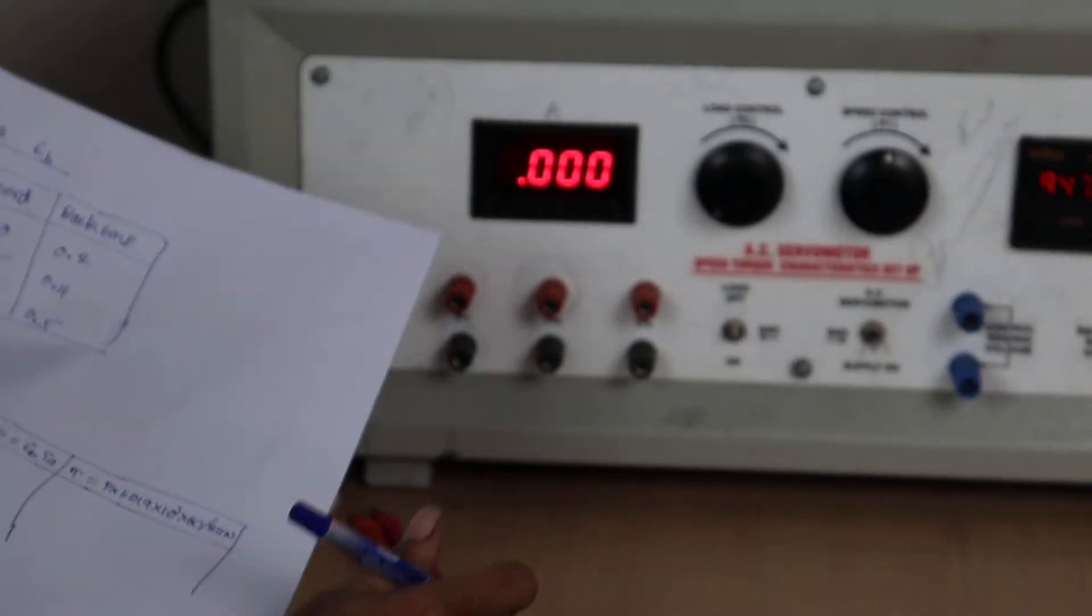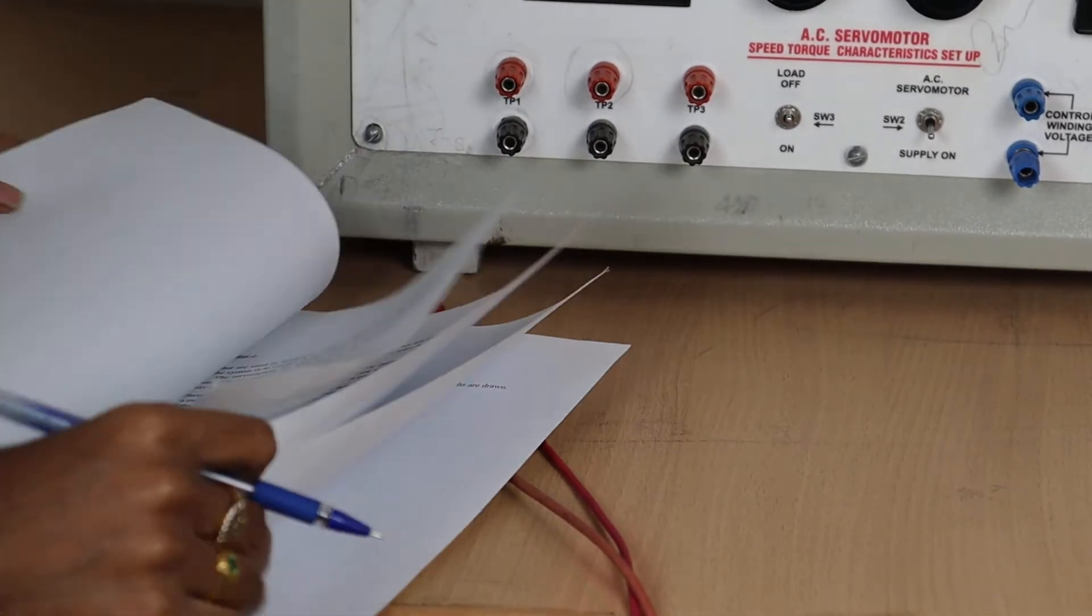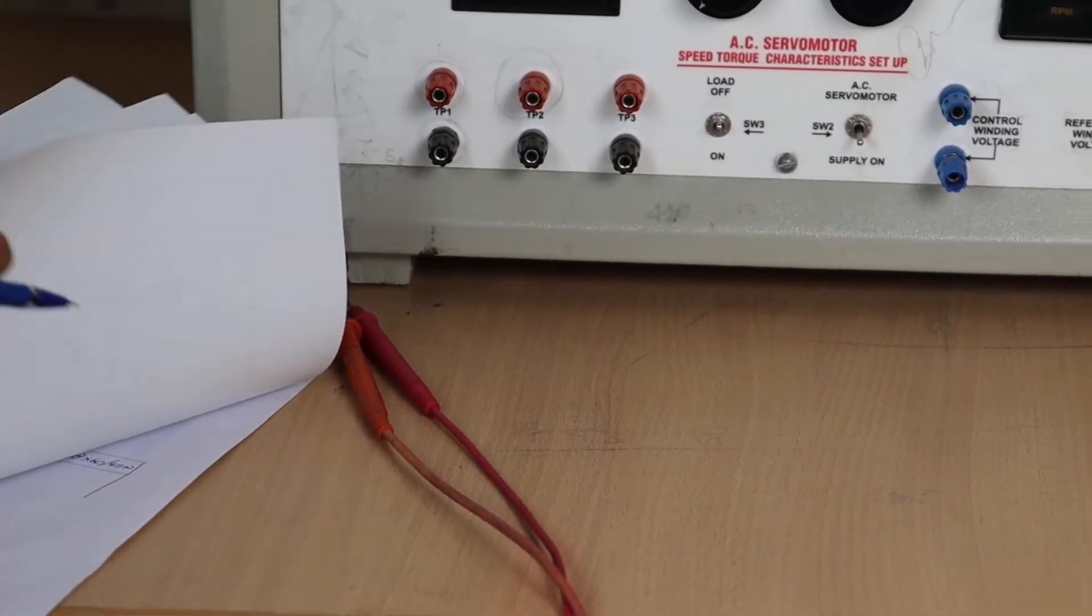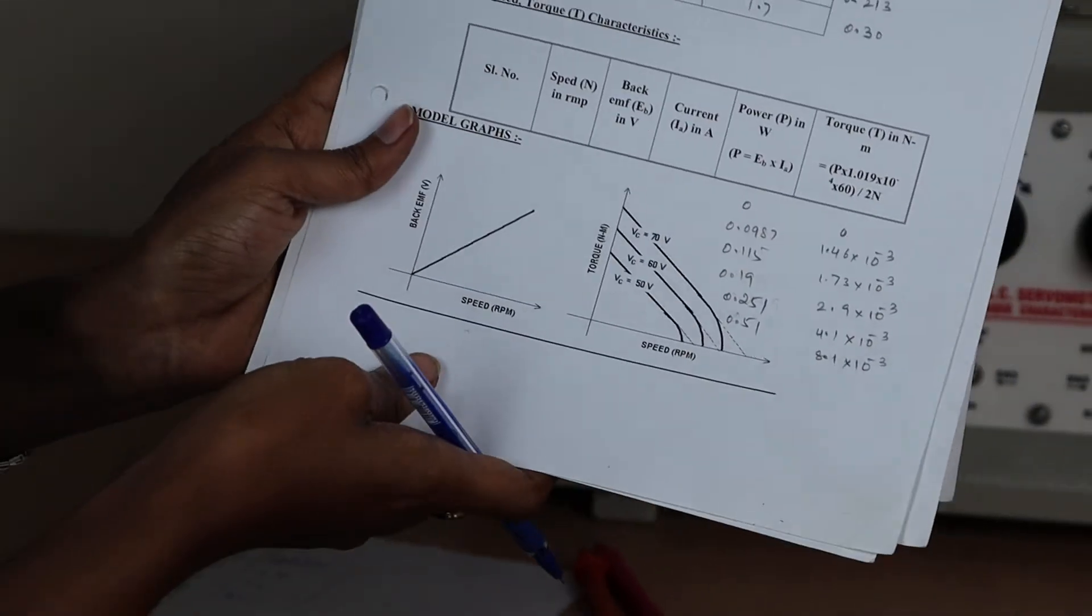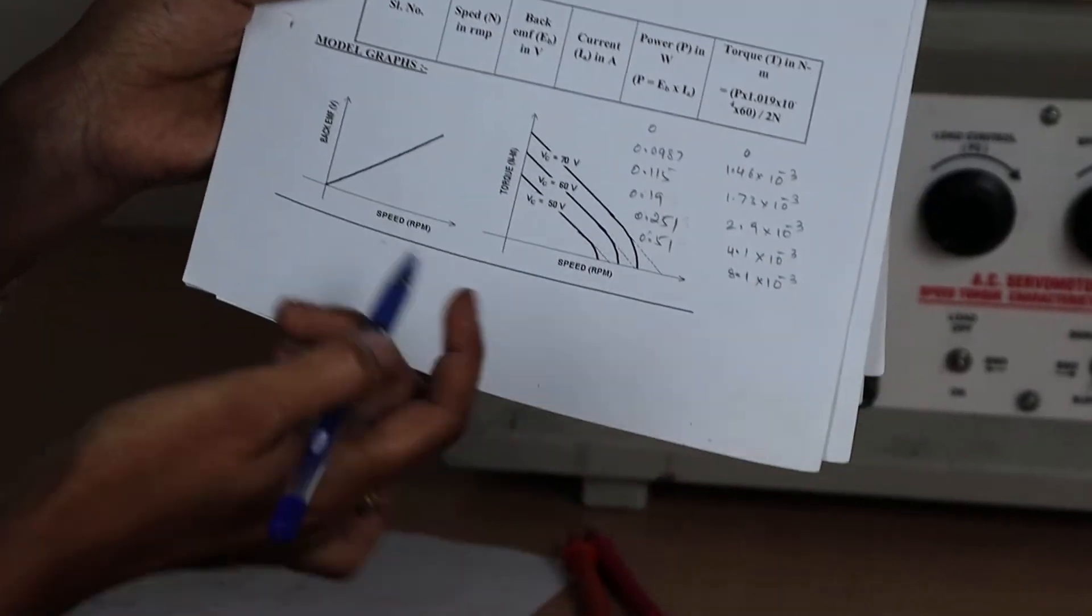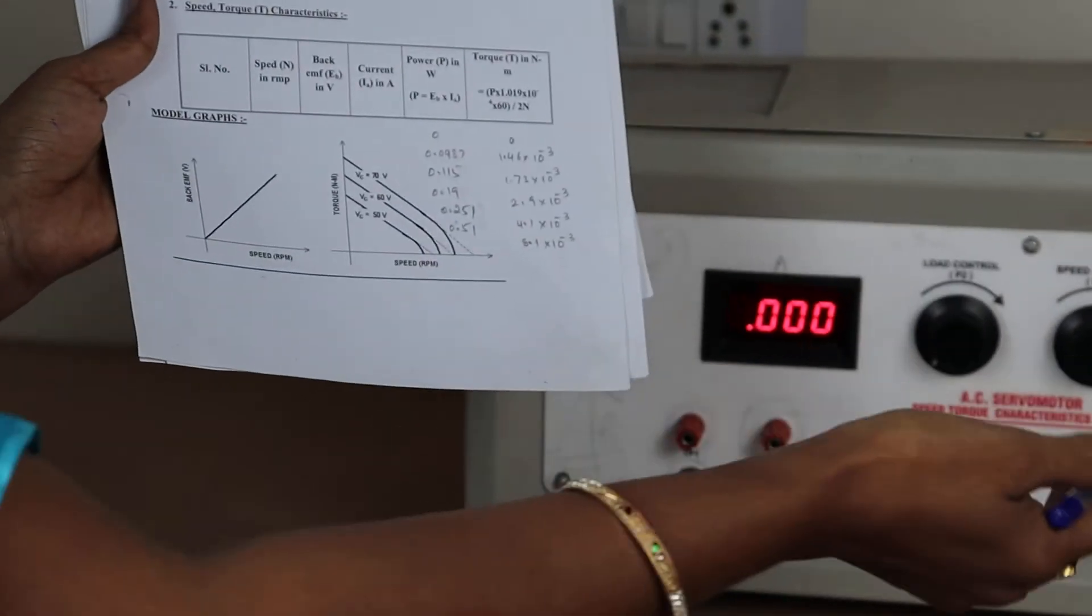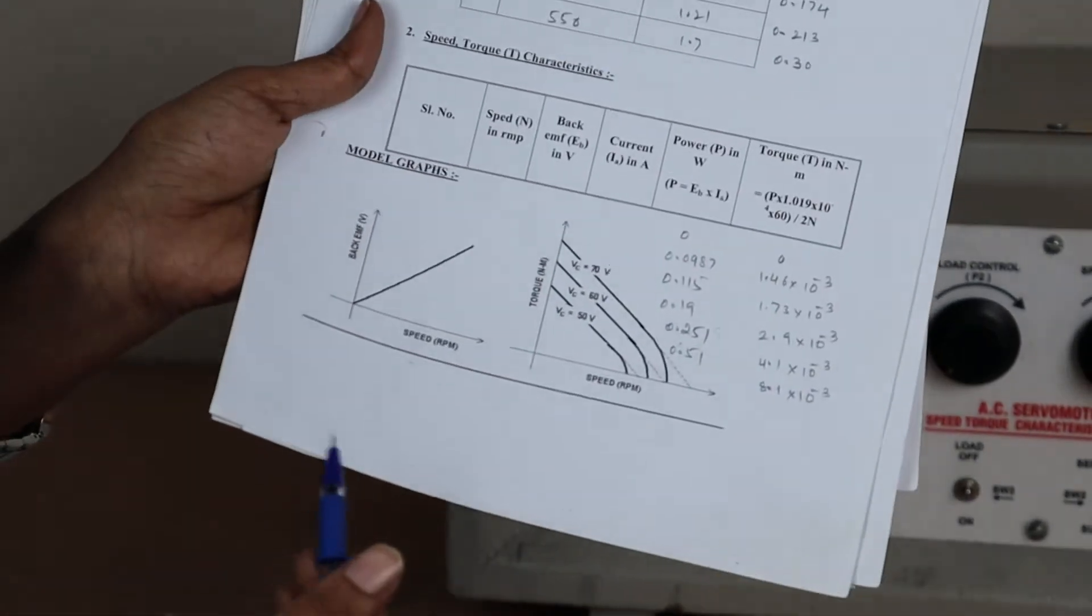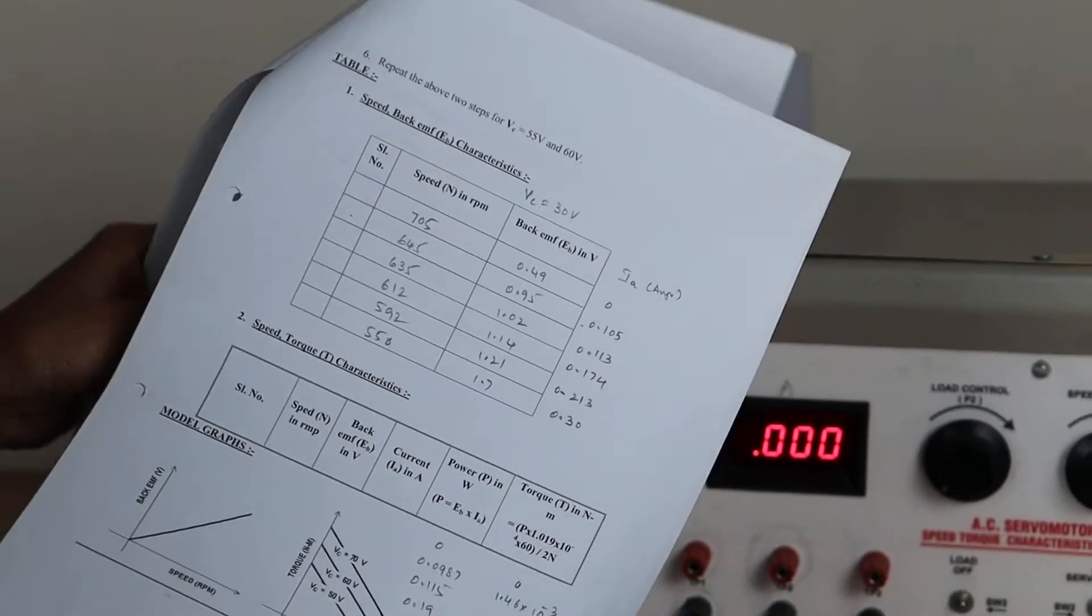By using these two you have to draw the graph. So if you draw the graph you can get a straight line like this. Why? Because speed and back EMF both are proportional to each other. That's why if you increase the speed, automatically back EMF will get increased, that we have seen in this multimeter just now. So this is speed and back EMF characteristics.